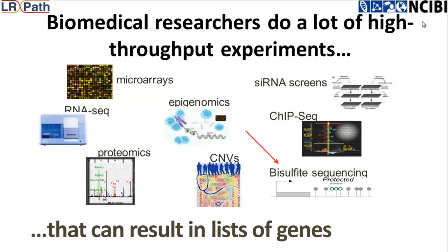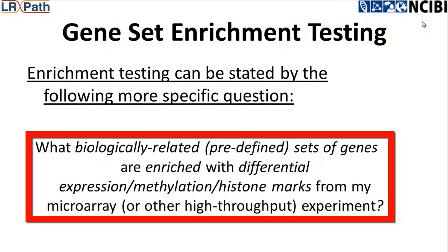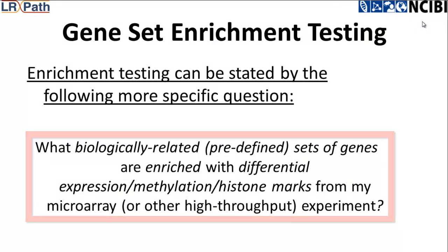Currently, biomedical researchers do a lot of high-throughput experiments that result in lists of genes. It is difficult to understand these results by looking through the list one gene at a time. Gene-set enrichment testing is one method that can help interpret a long list of genes. Gene-set enrichment testing can answer the following question: what biologically related or predefined sets of genes are enriched with differential expression, methylation, or histone marks from a microarray or other high-throughput experiment?